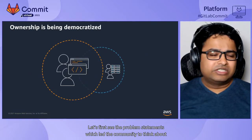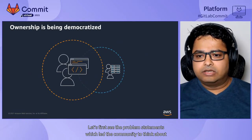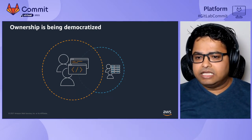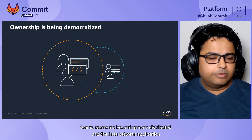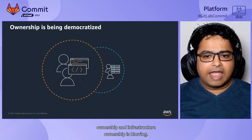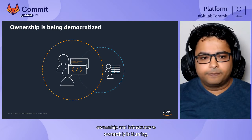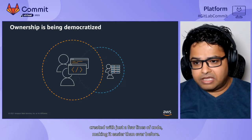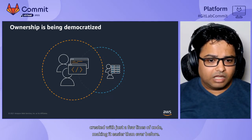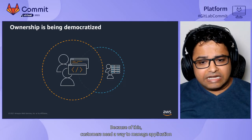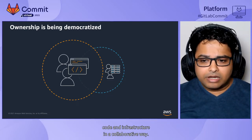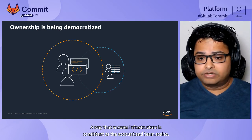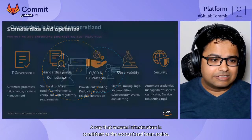Let's first look at the problem statements which led the community to think about GitOps. With the evolution of microservices and application modernization, teams are becoming more distributed and the lines between application ownership and infrastructure ownership are blurring. Additionally, cloud infrastructure can be created with just a few lines of code, making it easier than ever before. Because of this, customers need a way to manage application code and infrastructure in a collaborative way — a way that ensures infrastructure is consistent as the account and teams scale.